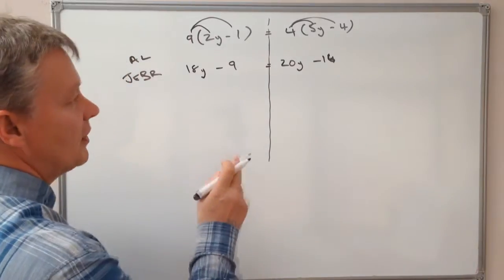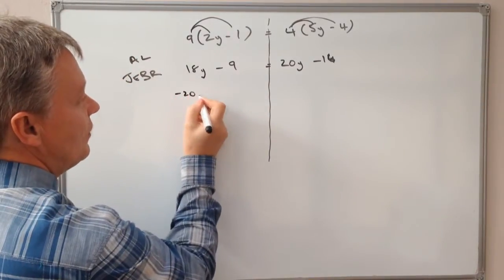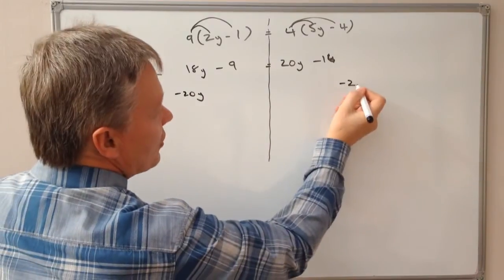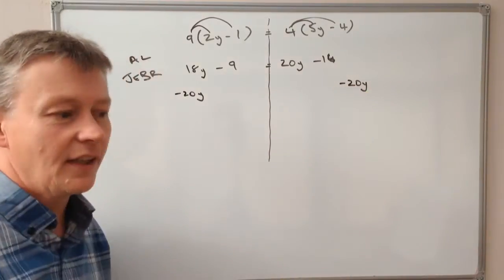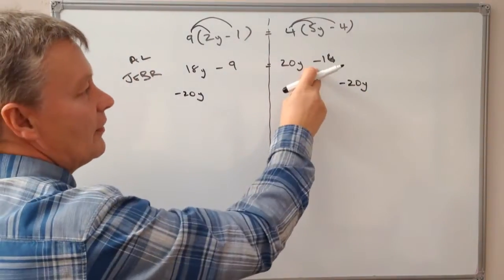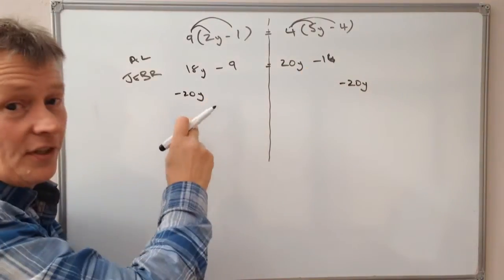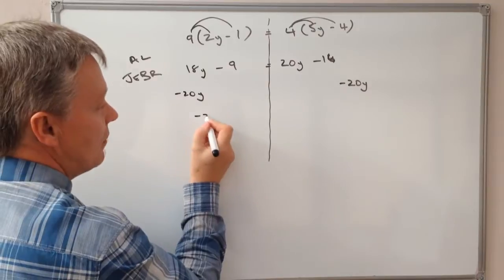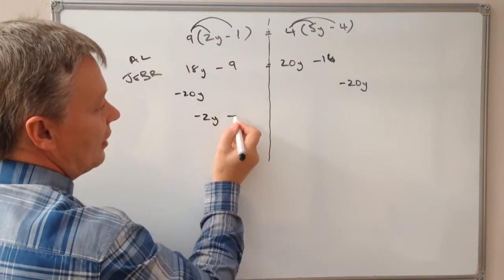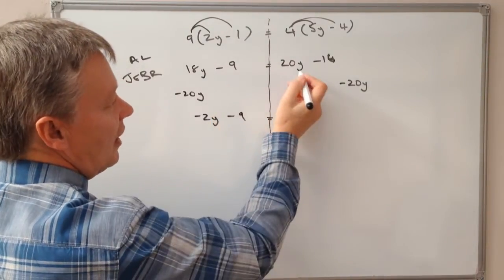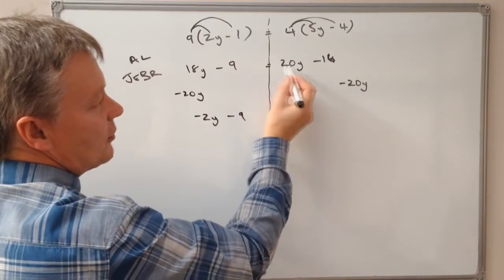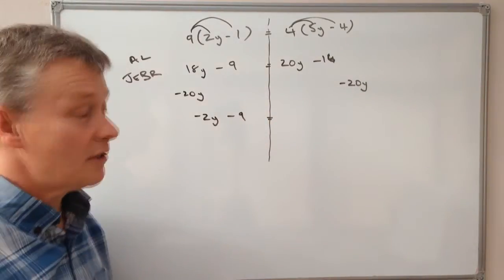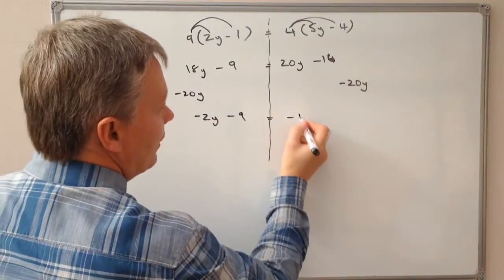What I'm going to do is take 20y from both sides, because I want numbers on this side and letters on this side. So I get 18y minus 20y is minus 2y, still got my minus 9. On this side, 20y minus 20y is nothing, and I've got minus 16.